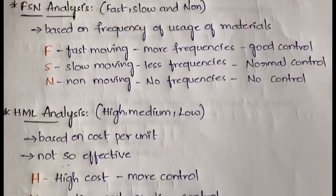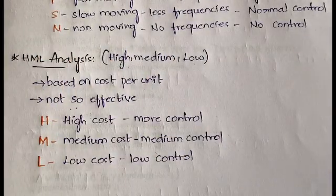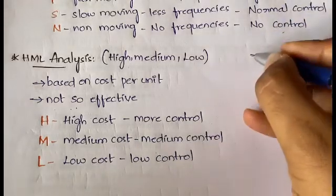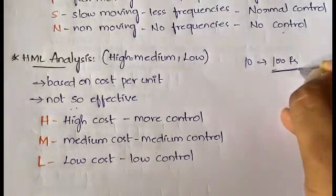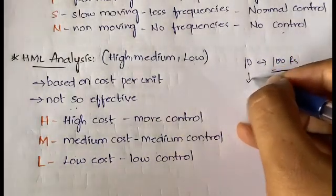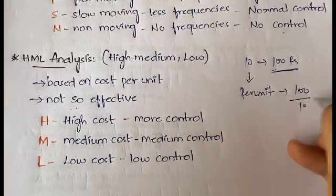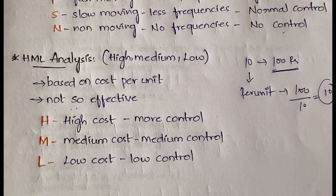Next is HML analysis, where H stands for High, M for Medium, and L for Low — referring to cost per unit, not total cost. For example, if you buy 10 pens for 100 rupees, the total cost is 100 rupees, but the cost per unit is 100 divided by 10, which equals 10 rupees per pen.